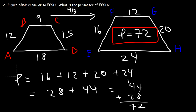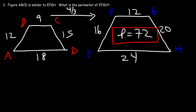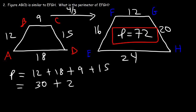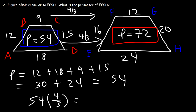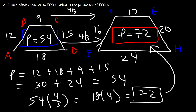Here's another way to get the same answer. First calculate the perimeter of the first figure ABCD: 12 plus 18 plus 9 plus 15 equals 54. Then multiply the perimeter of the first figure by the enlargement ratio: 54 times 4 over 3. 54 divided by 3 is 18, and 18 times 4 is 72. That confirms the perimeter of EFGH is 72 units.